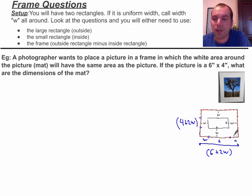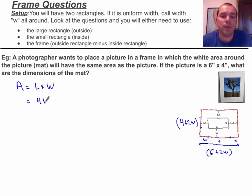So what's the area for a rectangle? It's basically length times width. And in this case, length times width is 4 plus 2w times 6 plus 2w.